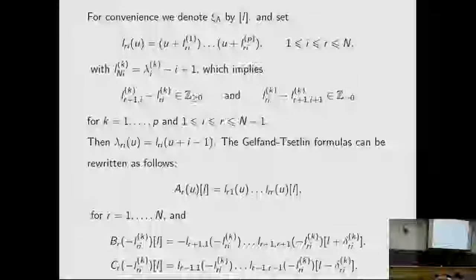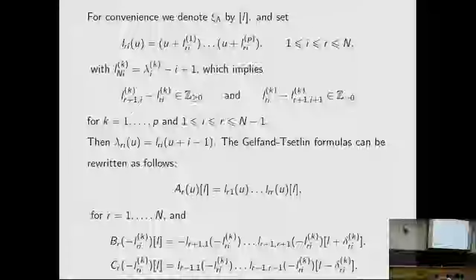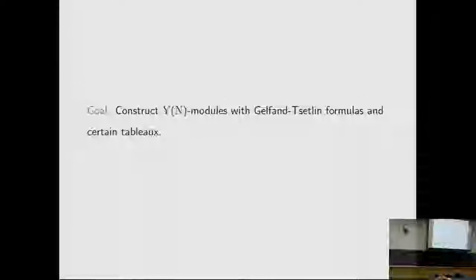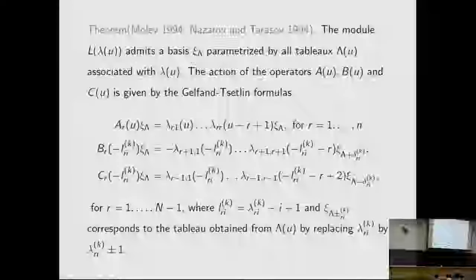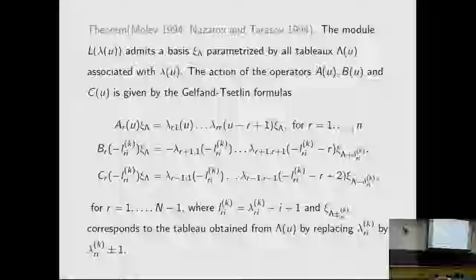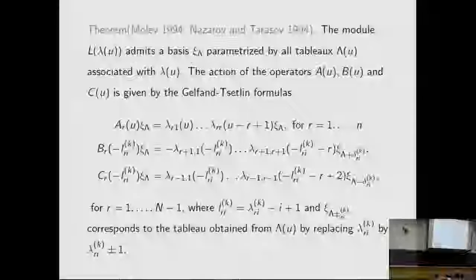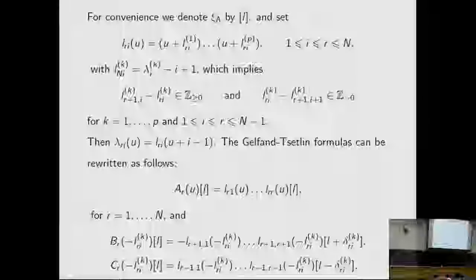This gives the action of operators A, B, and C. Here we compare the formulas: one form is the action on K_c(lambda), and the rewritten form is in terms of L. The formulas can be read in this way.